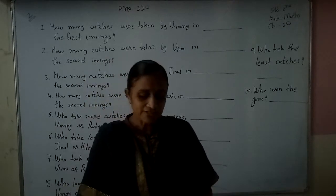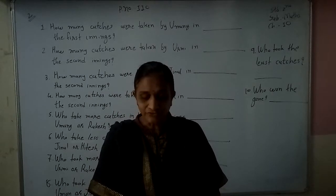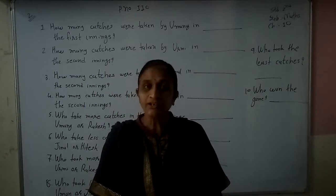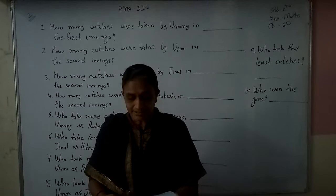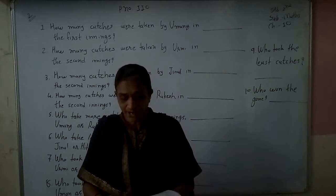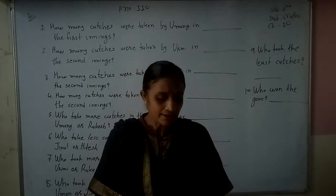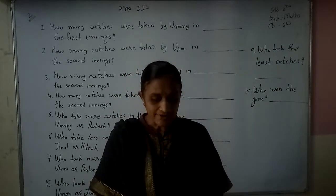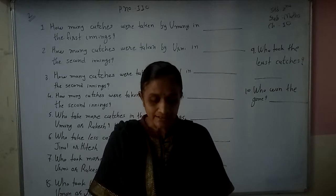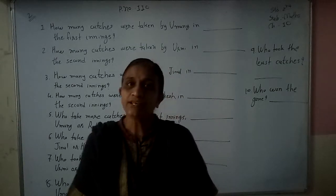Third friend: Gina — first inning 15, second inning 4, total 19. Fourth friend: Kitesh — first inning 9, second inning 5, total 14. Fifth friend: Rakesh — first inning 17, second inning 8, total 26.